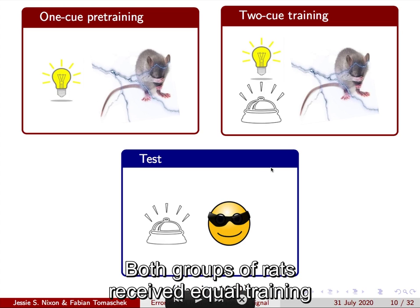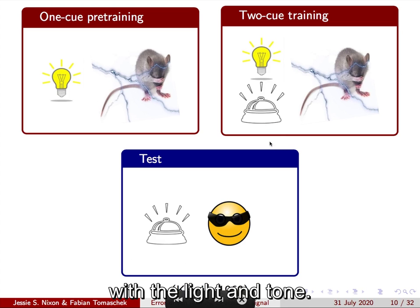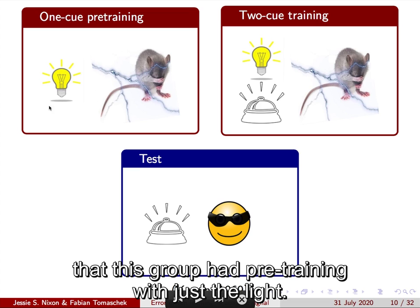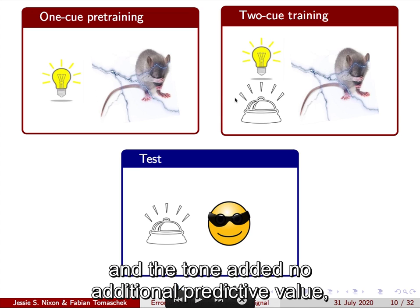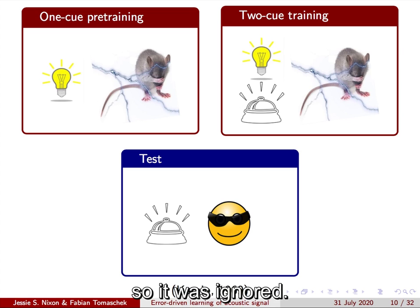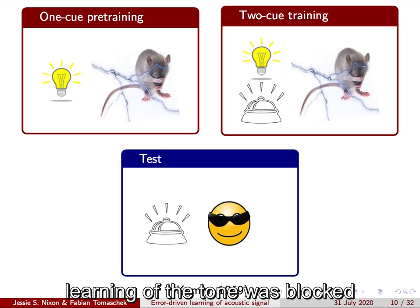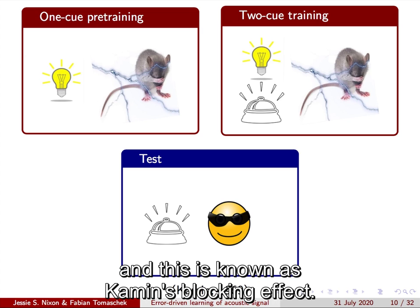Both groups of rats received equal training with the light and tone. The only difference was that this group had pre-training with just the light. That meant that the rats could already predict the shock based on the light and the tone added no additional predictive value. So it was ignored or in other words, learning of the tone was blocked. This is known as Kamin's blocking effect.